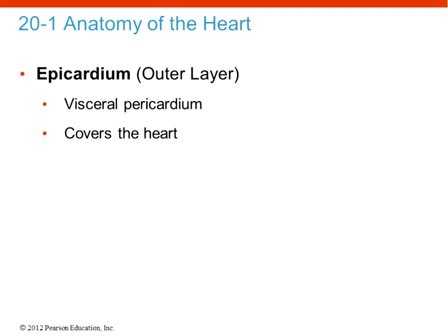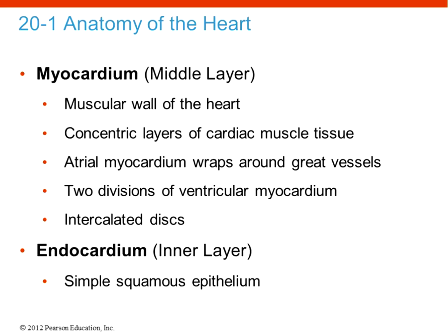The outermost layer of the heart is the epicardium, which directly contacts the visceral pericardium. The middle layer is the myocardium — the actual muscular layer responsible for contraction of the atria and ventricles. The heart beats top to bottom in concentric layers of cardiac muscle: atrial myocardium wraps around the great vessels and there are two divisions of ventricular myocardium. The innermost layer, the endocardium, is made of simple squamous epithelial cells. Opening up the heart reveals that the four chambers are hollow so blood can fill them.